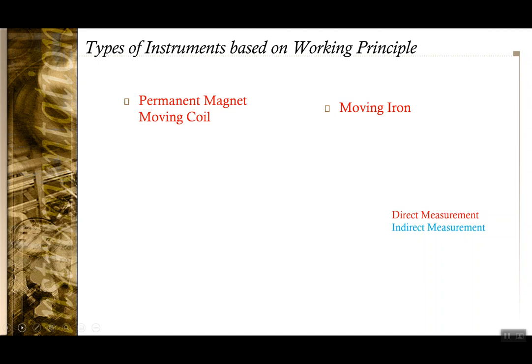Based on the working principle and what directly causes the deflection, instruments can be classified into direct measurement instruments like the permanent magnet moving coil (PMMC) instrument, which we will see in today's lecture.